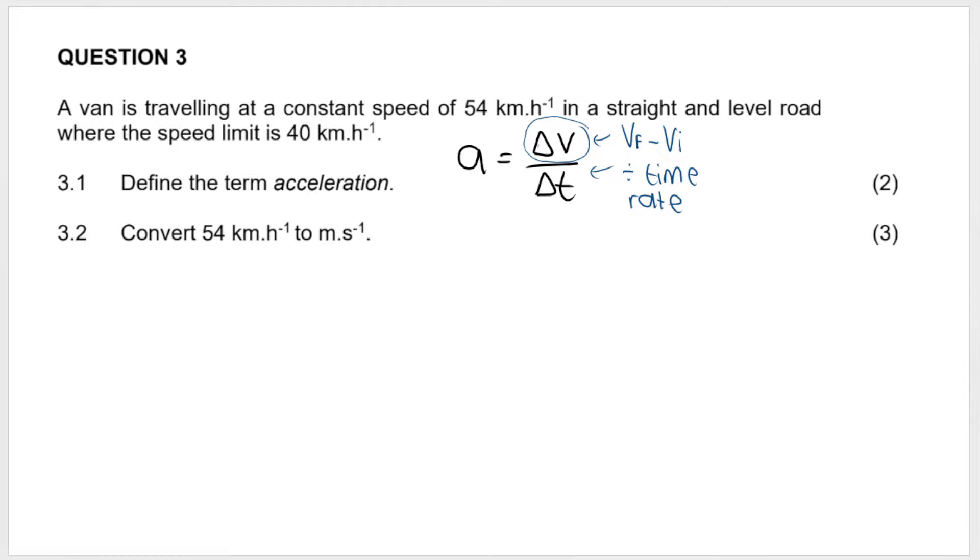Two marks or nothing over there. Then my next question is easy marks. They want me to convert 54 kilometers per hour to meters per second. Now I've taught you this in a previous video, but to go from kilometers per hour to meters per second, we divide by 3.6. And if we're going the other way, you multiply by 3.6. So essentially, you need to show me it's three marks, so I do want to see a calculation. 54 divided by 3.6 and we get 15 meters per second. Easy, easy three marks.